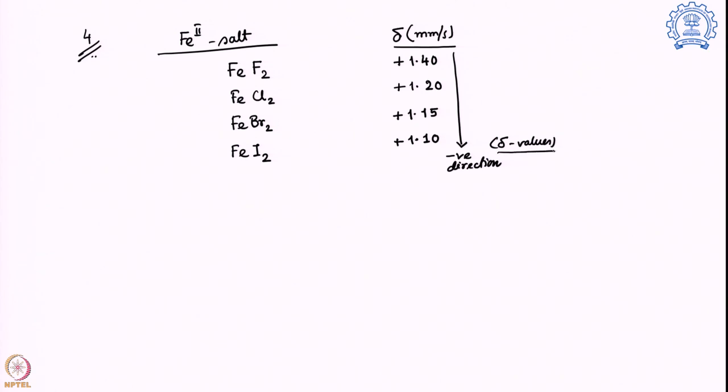Now the question is why? For that we want to take a look into the structure of these particular complexes. Over here we are looking at an iron 2 sample interacting with fluoride ions and this interaction and its properties are going to control how the d electron density and the resultant s electron density is going to change and how it will affect the Mössbauer spectroscopic parameter, the isomer shift.